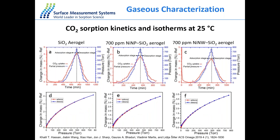Now let's look at the carbon dioxide studies at 25°C. The top row shows kinetics for CO2 adsorption up to 1 bar, and the bottom shows the adsorption-desorption isotherms. The adsorption and desorption curves are almost identical — the process is reversible, with desorption returning to the same starting point. There is no hysteresis loop observed, indicating no capillary condensation in the pores. Pure silica aerogels show the highest adsorption capacity for carbon dioxide, followed by nickel nanoparticle samples at different loadings and then nickel nanowires.